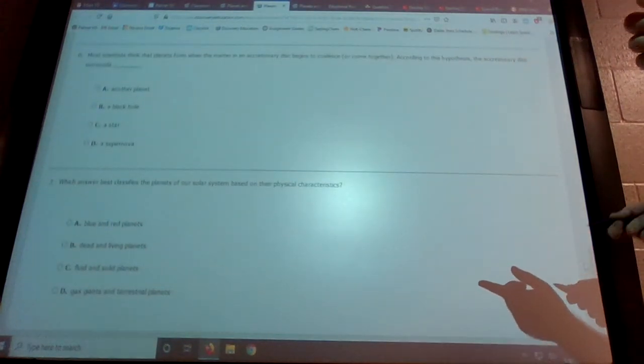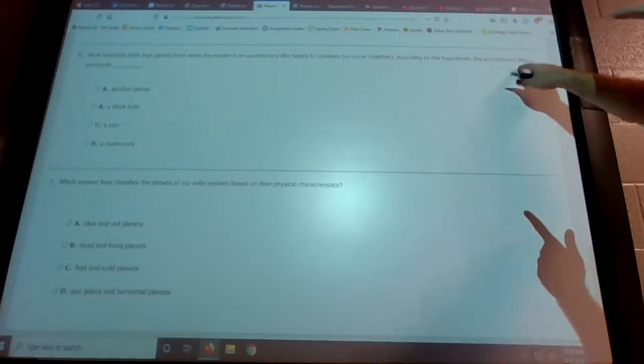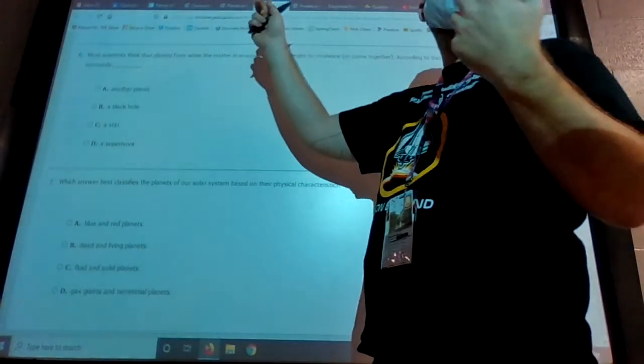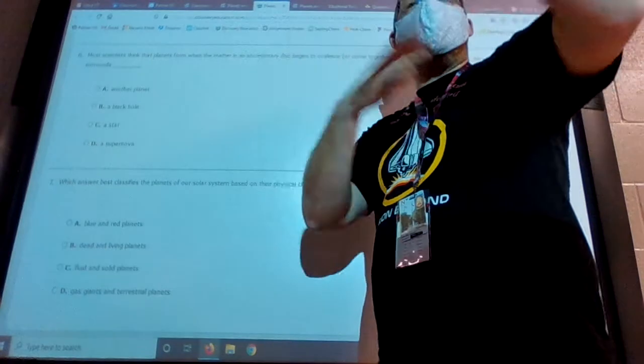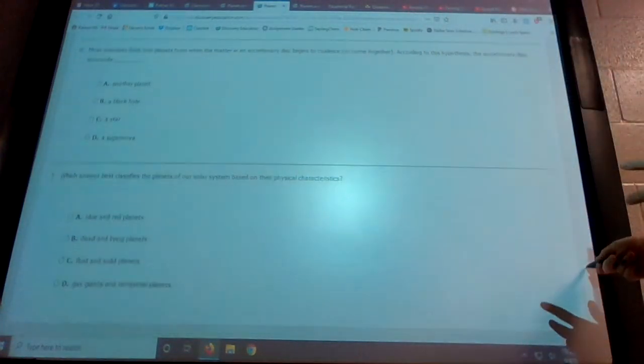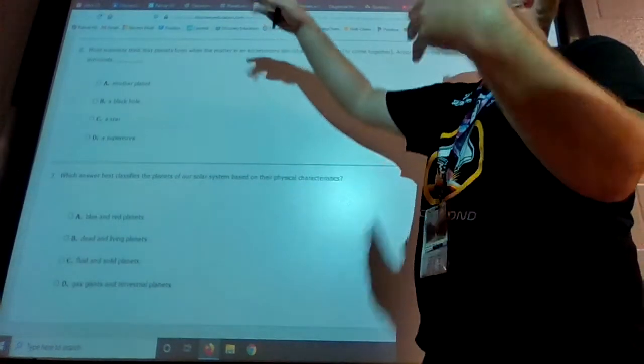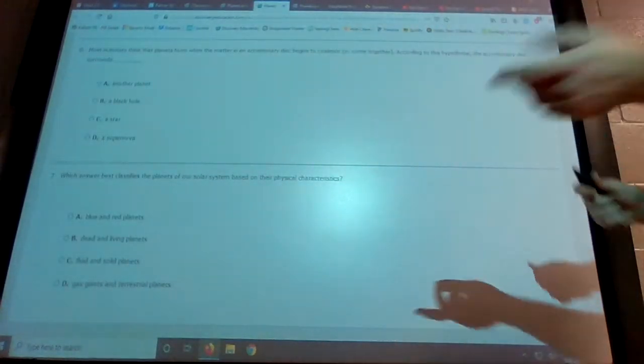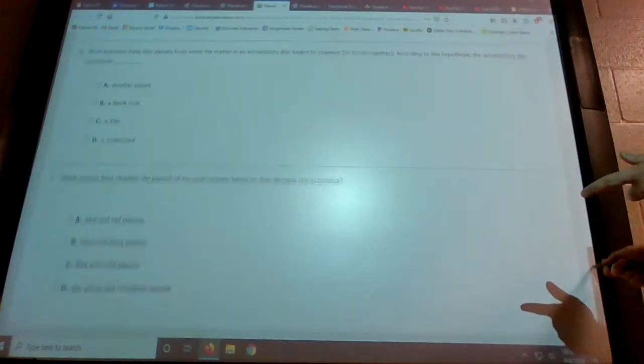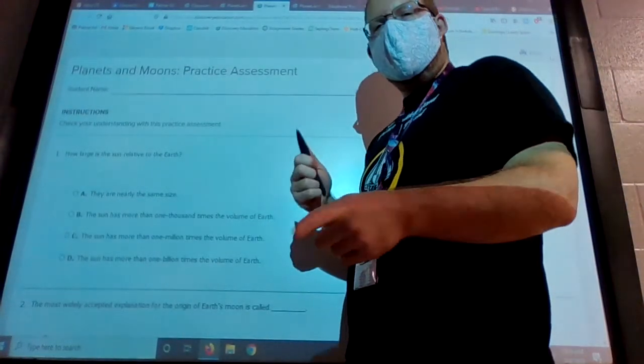Most scientists think that planets form when matter and accretionated. According to this hypothesis, the accretionary disk surrounds. That's kind of the same question. What's in the middle of the things that form the planets? It's got to be a star that's in the middle. And then which answer best classifies planets of our solar system based on their physical characteristics? You've got to separate the inner planets from the outer planets. And so that should be pretty easy, too. So if you have any questions, email me, especially people online at home.